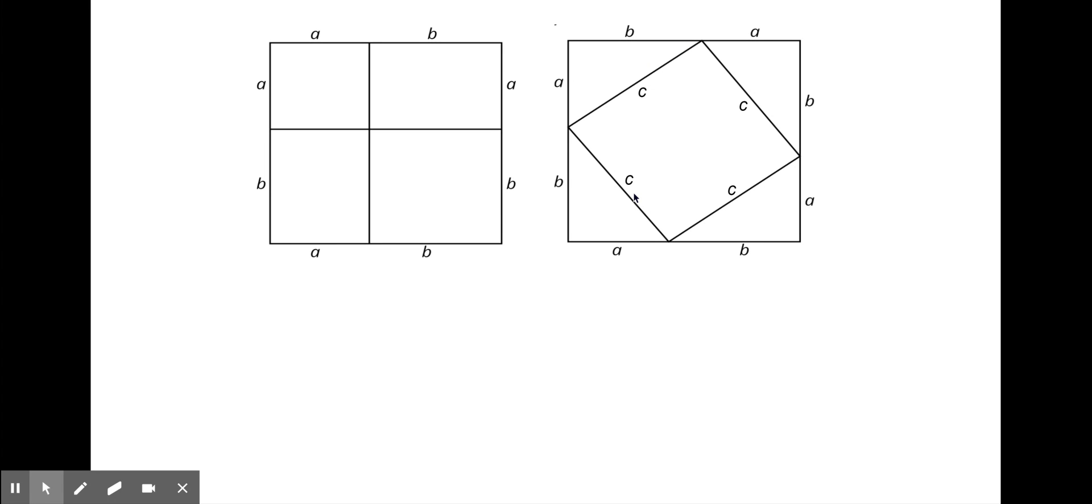You may notice that we have two squares of side lengths A plus B, so we know that these two squares have the same area, but they are partitioned differently, and we will use that information to help us prove the Pythagorean Theorem.